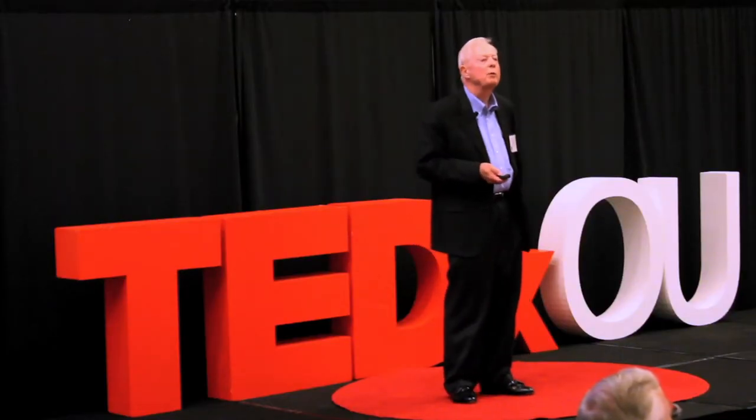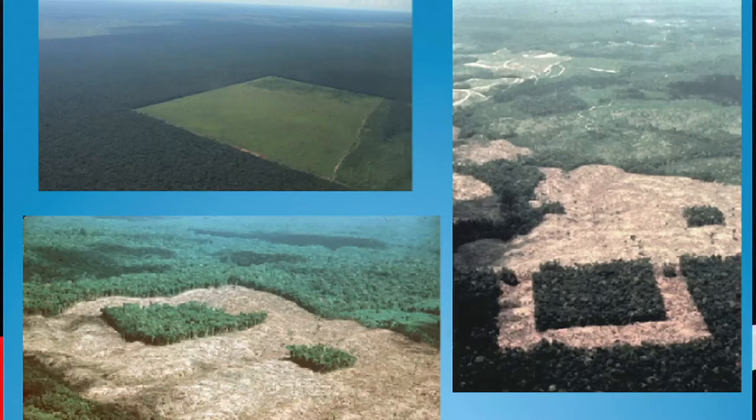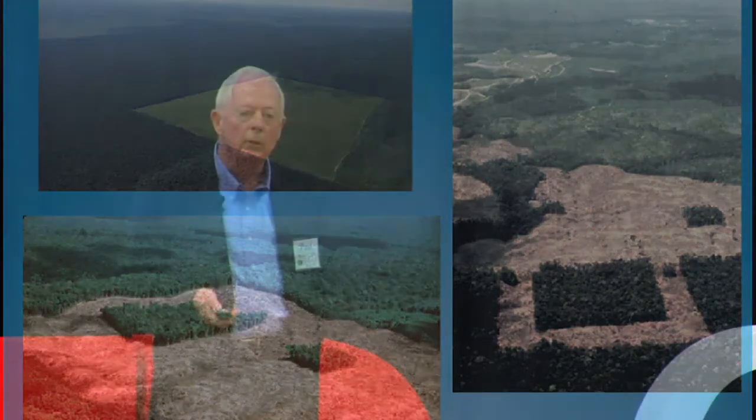This is what Tom Lovejoy's experiments look like. He cut the forest into different squares, different sizes, different fragments, and then asked over time what happens in those fragments. Well, it turns out the number of plants and animals decrease in those islands and those fragments. Furthermore, the smaller islands have a greater decrease in biological diversity. And even more interesting, the farther apart the islands are, the greater the loss in diversity.